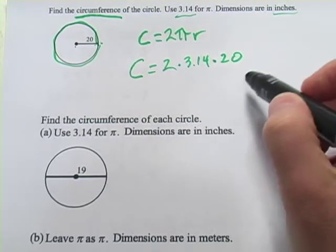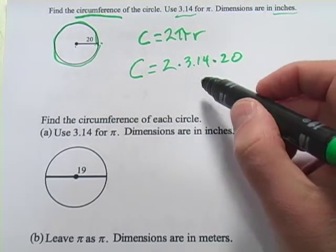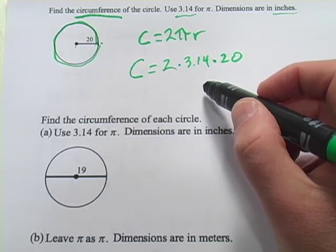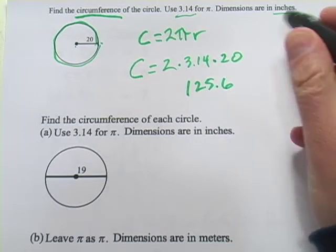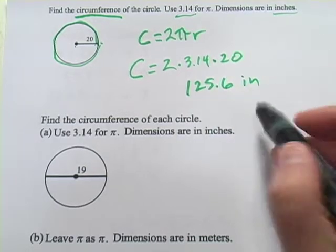And you can plug that into your calculator, 2 times 20 times 3.14. And what you should get out is 125.6, and this was in inches. And this is just plain old inches.